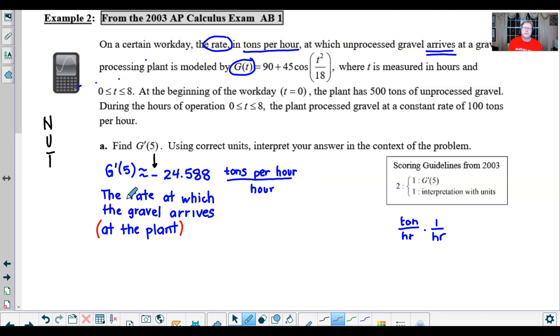As long as you convey the general noun number, we are going to be perfectly fine with your response. So the rate at which the gravel arrives at the plant is, well we said decreasing, right? It is decreasing.